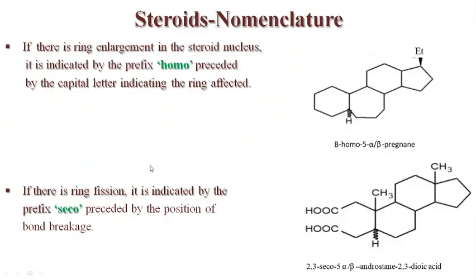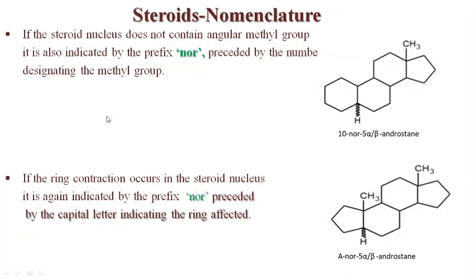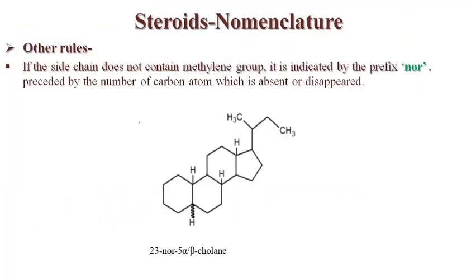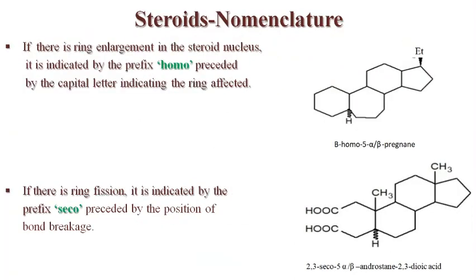This is all about the nomenclature. Some important points highlighted: where to use the prefixes 'nor', 'seco', and 'homo', along with the basic numbering and general rules we have discussed here. In our next lecture we will consider the stereochemistry of steroids. Thank you.